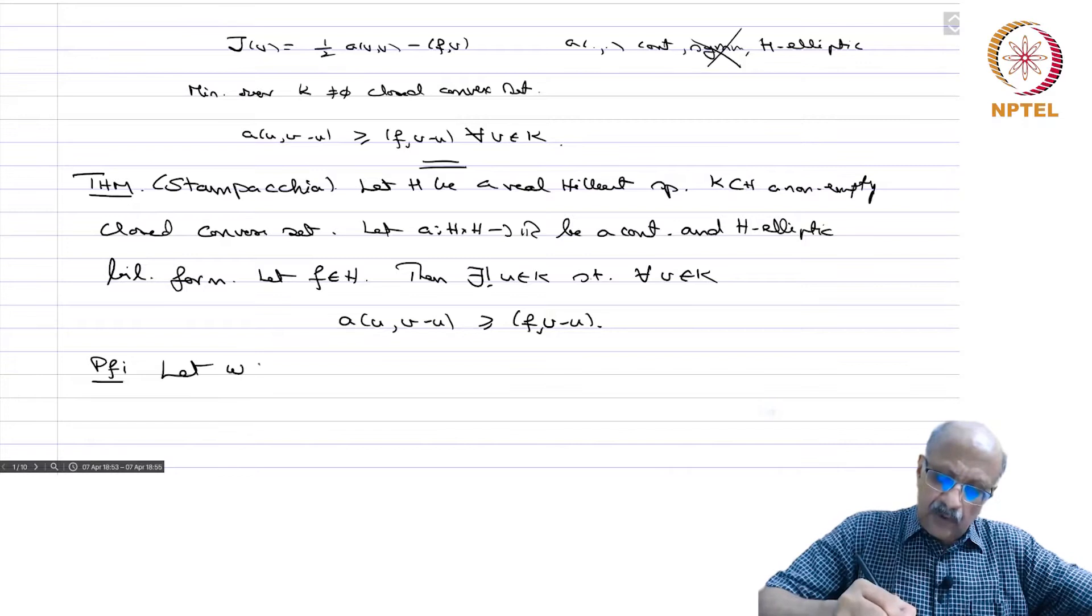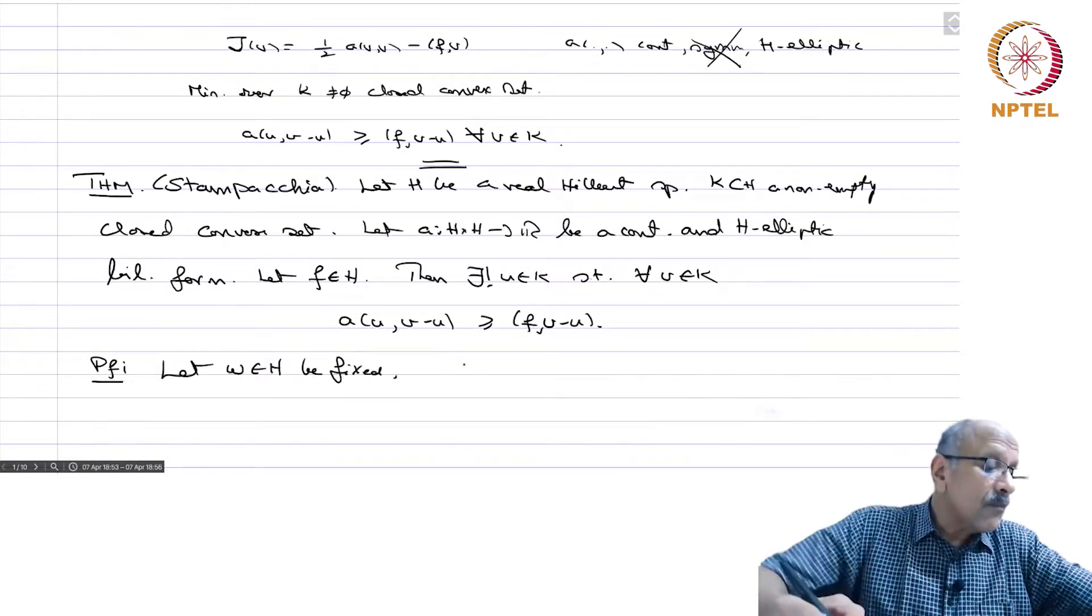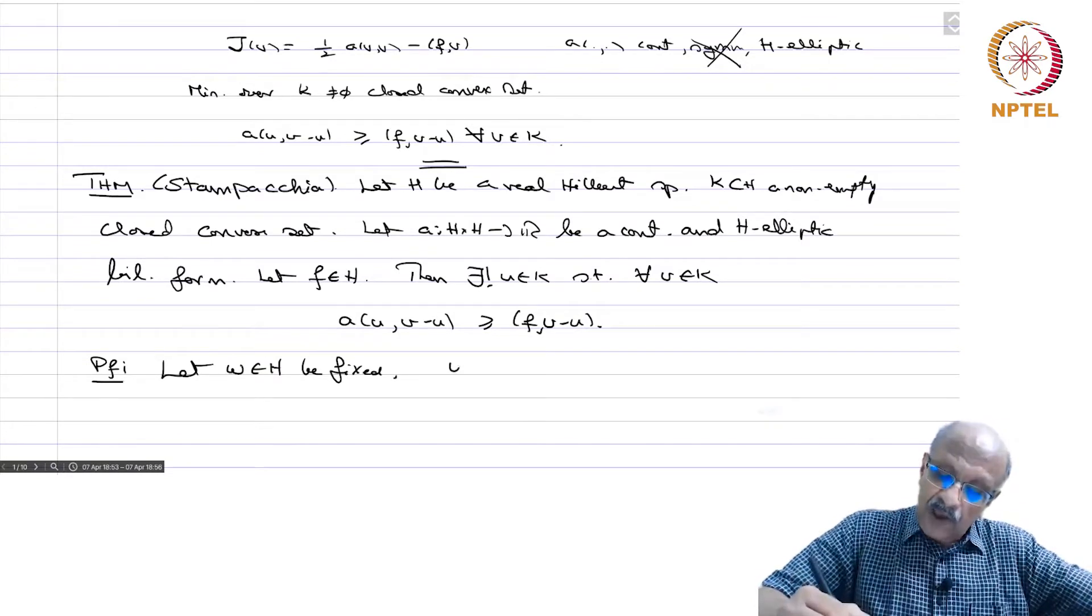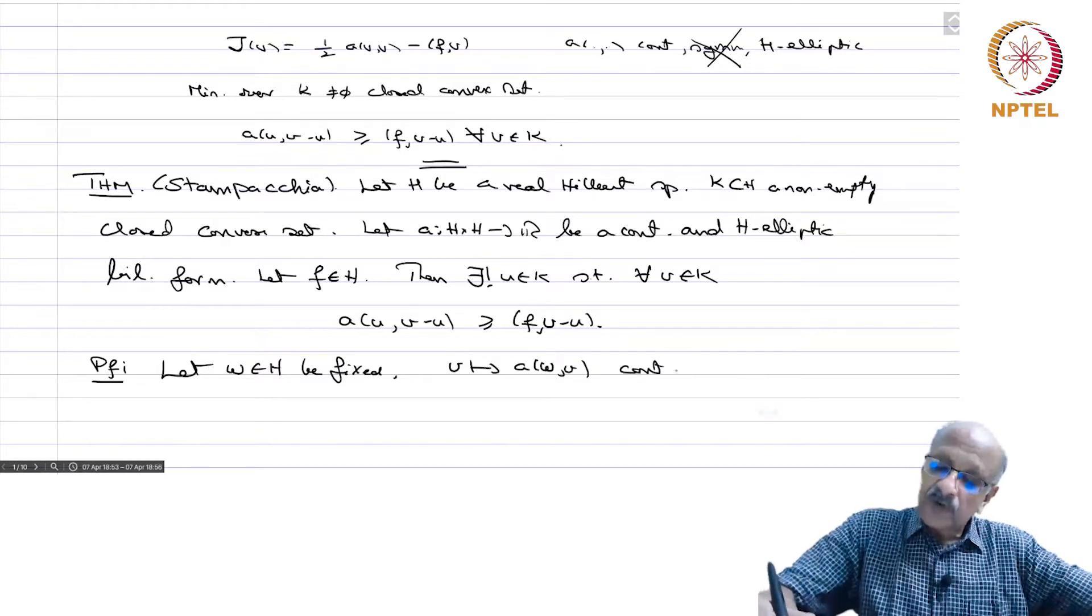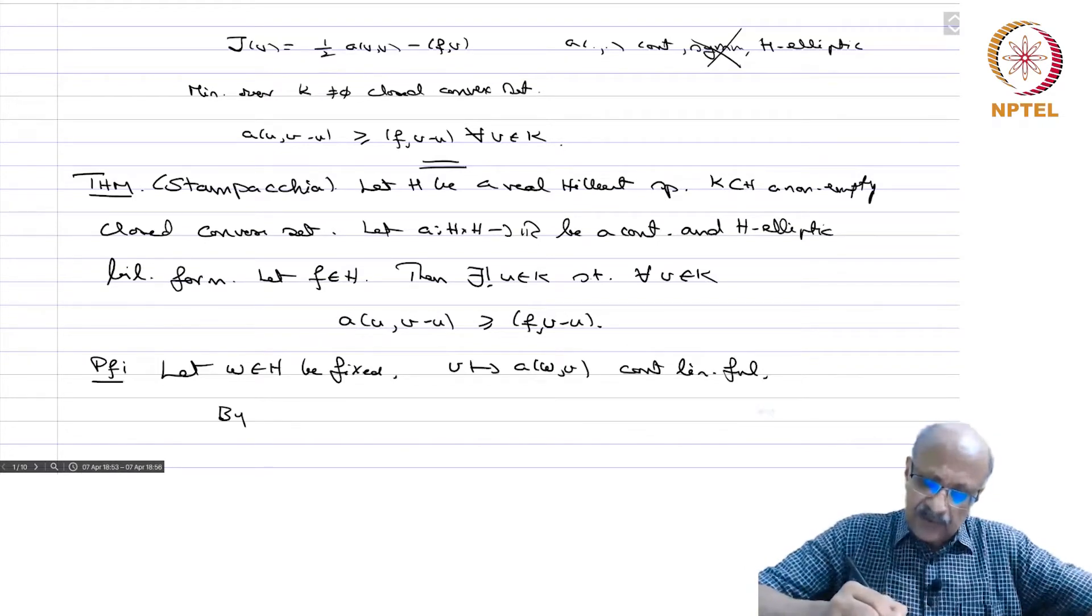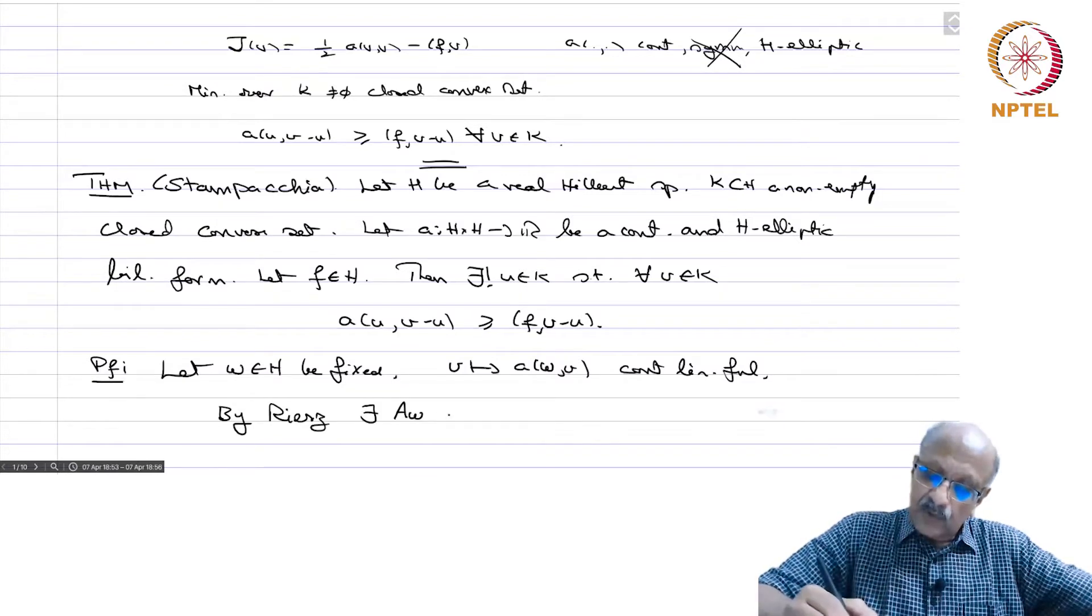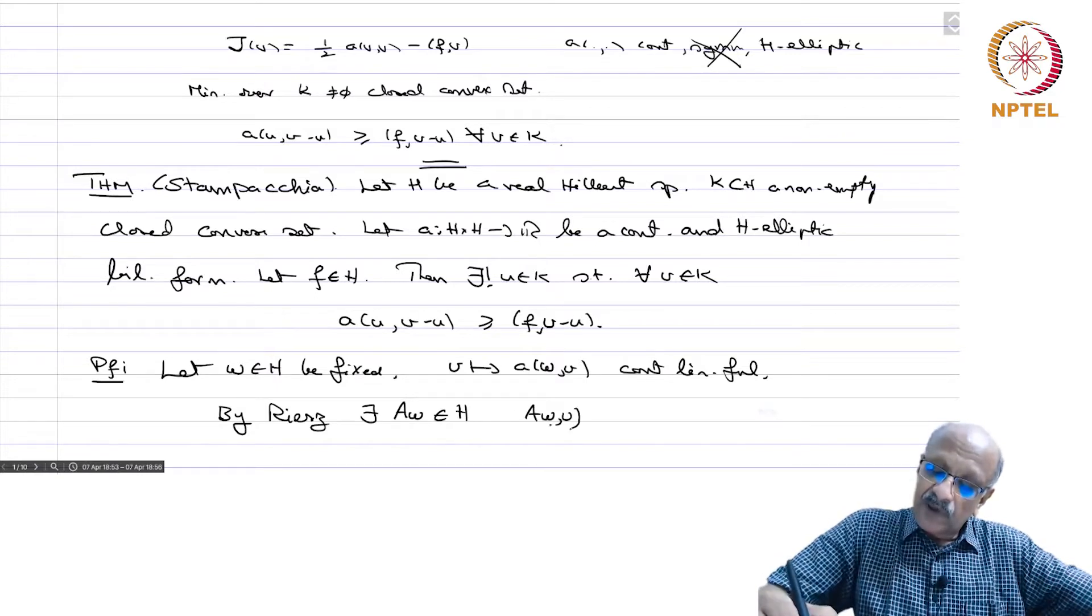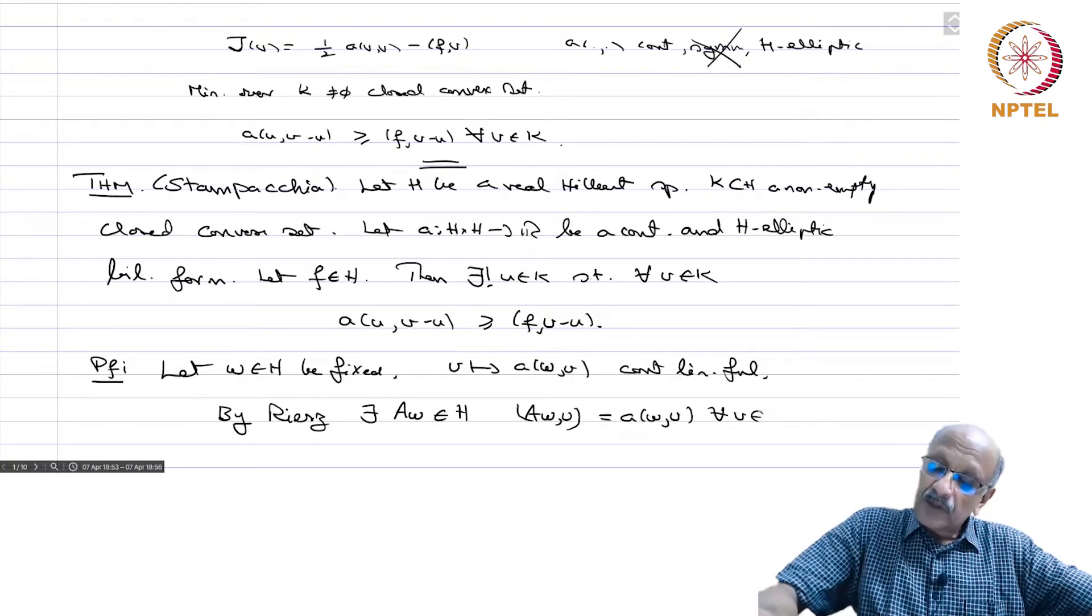Let W in H be fixed, and then v going to A(w,v) is a continuous linear functional. By Riesz theorem, there exists Aw in H such that Aw·v equals A(W,v) for every v in H.